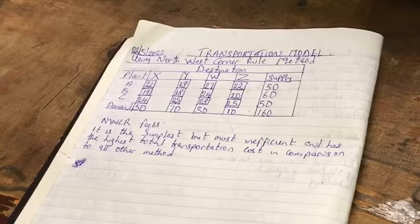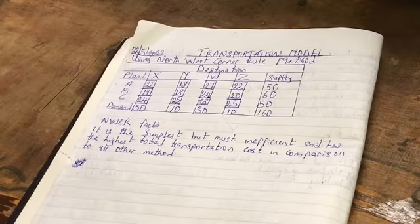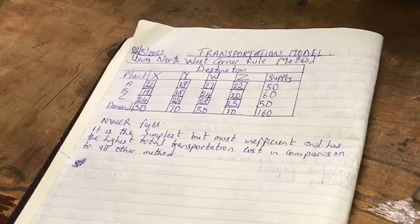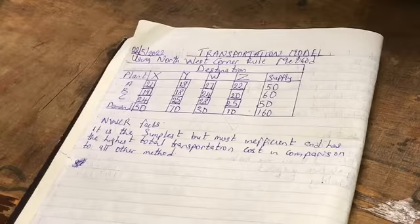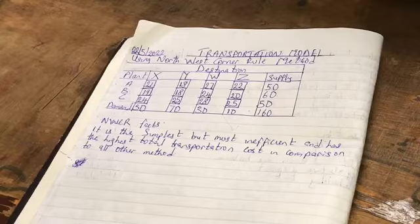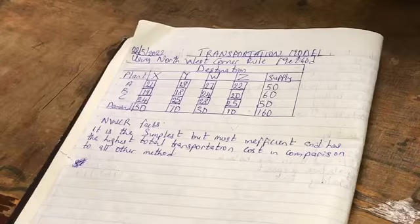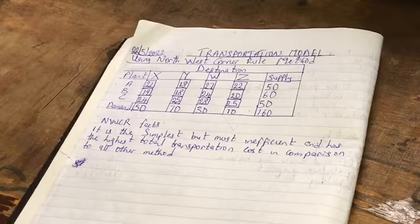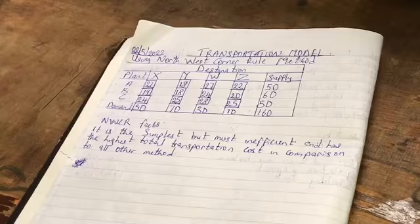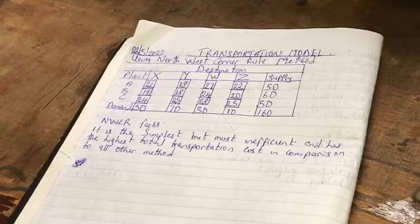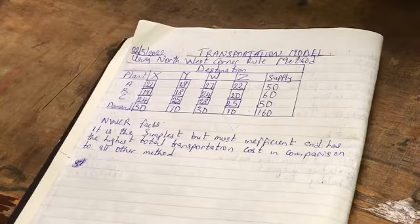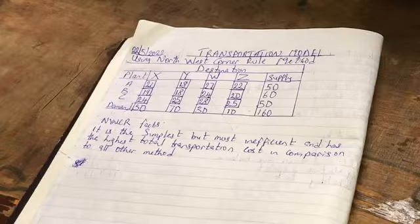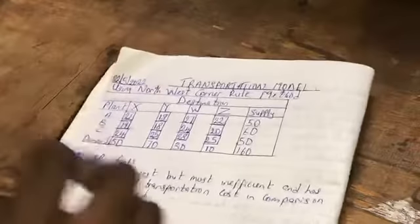Step 3: Step 2 should be continued until exactly one row or column is left uncrossed in the transportation matrix, then make allowable allocation to that row or column and stop, otherwise return to step 1. Therefore, you move next to apply the following steps to solving transportation model using Northwest Corner Rule method.